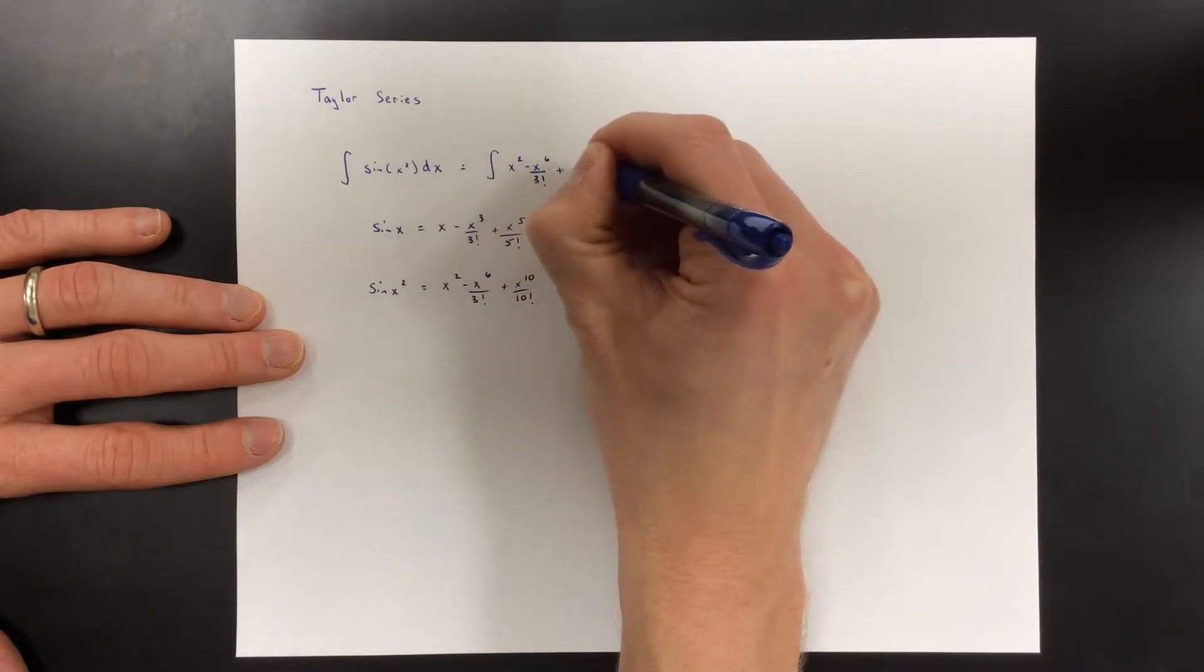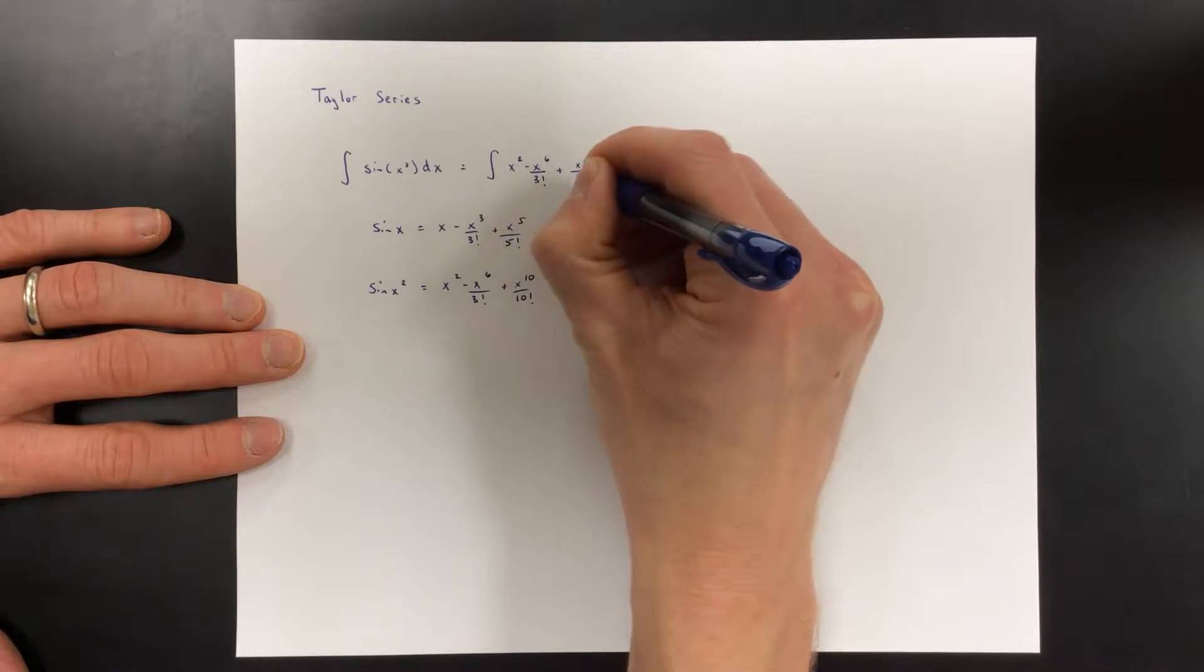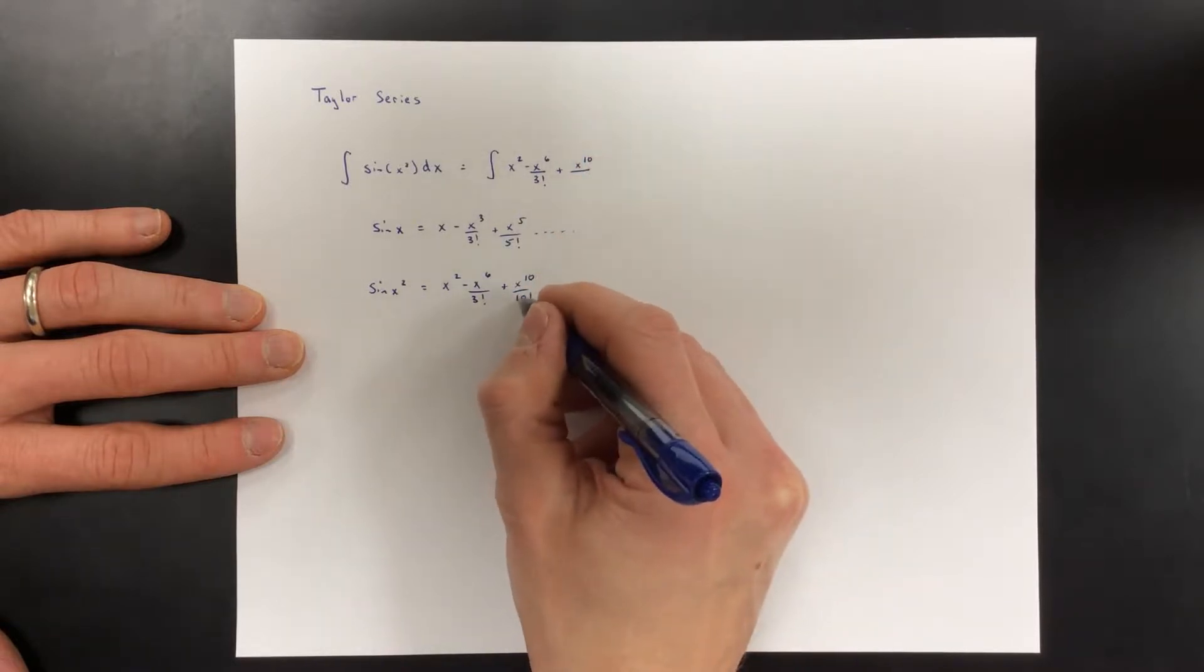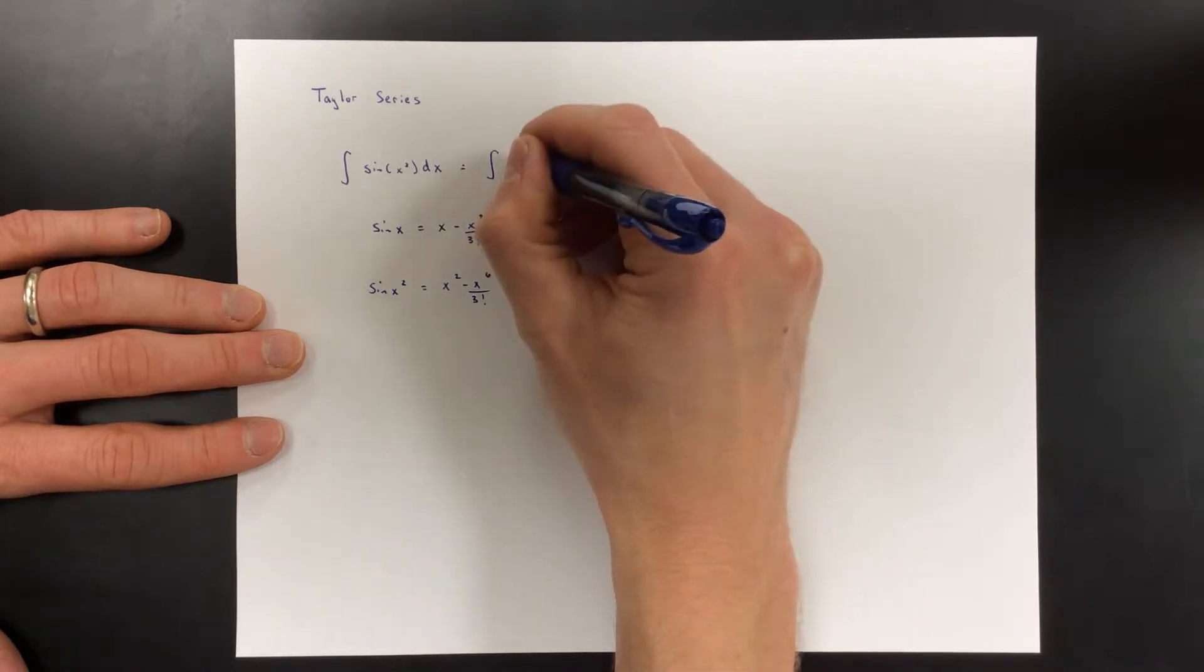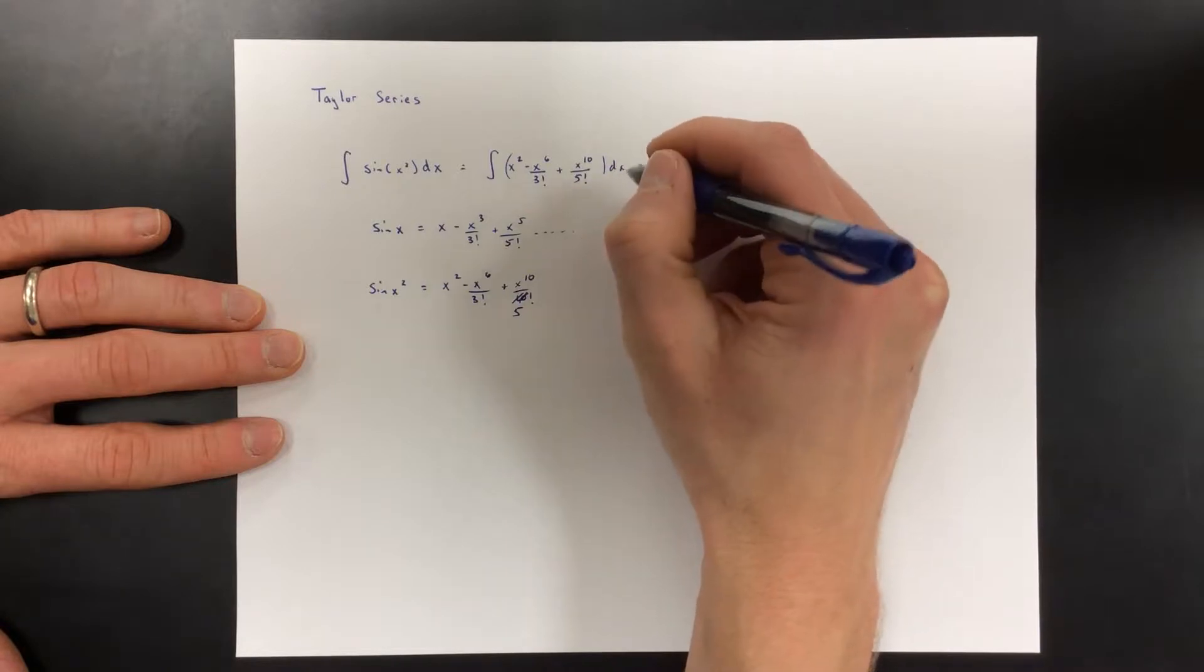So let's just replace this up here by what we know sine x squared is really close to being. Let me fix that - go back in your notes, that's not a ten that's a 5, 5 factorial dx.